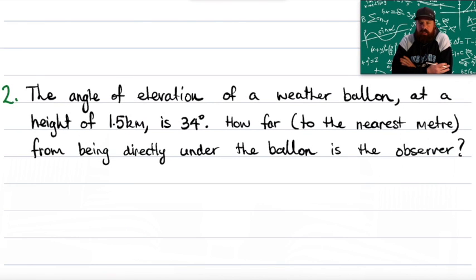Alright, U9, a second example here for our second lesson this week. The angle of elevation of a weather balloon at a height of 1.5 kilometers is 34 degrees.